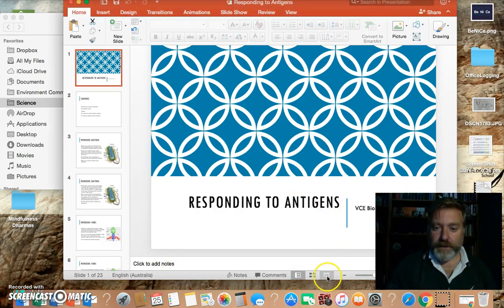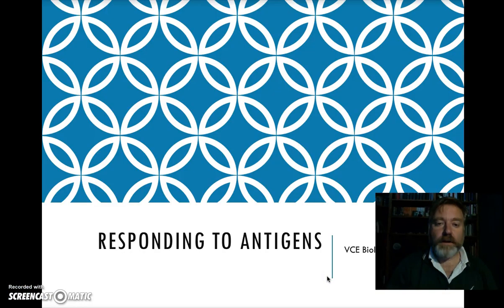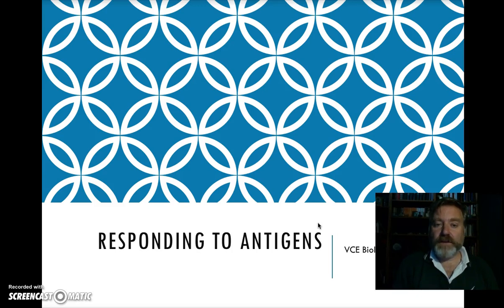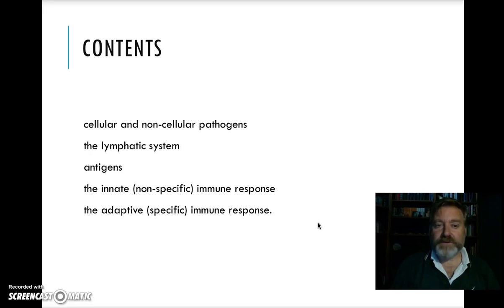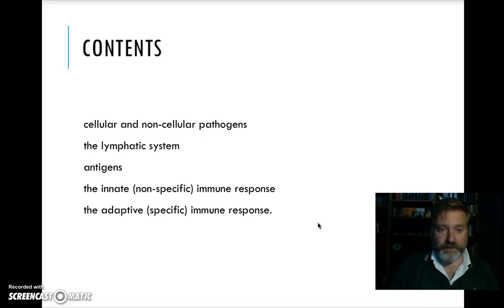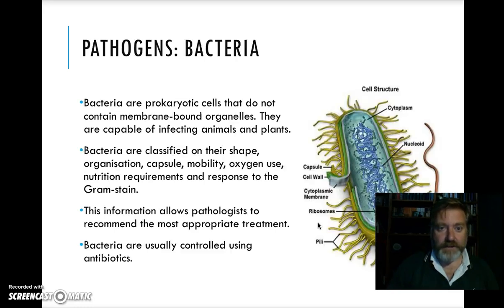Welcome back. This is the second part of Area State Unit 3, Area State 2: Responding to Antigens. I'm going to do this in two parts because the first part looks at pathogens which produce the antigens, and then we'll look at what our immune system does to respond to their presence. Topics include cellular and non-cellular pathogens, our lymphatic system, what antigens are, and the innate and adaptive immune responses.